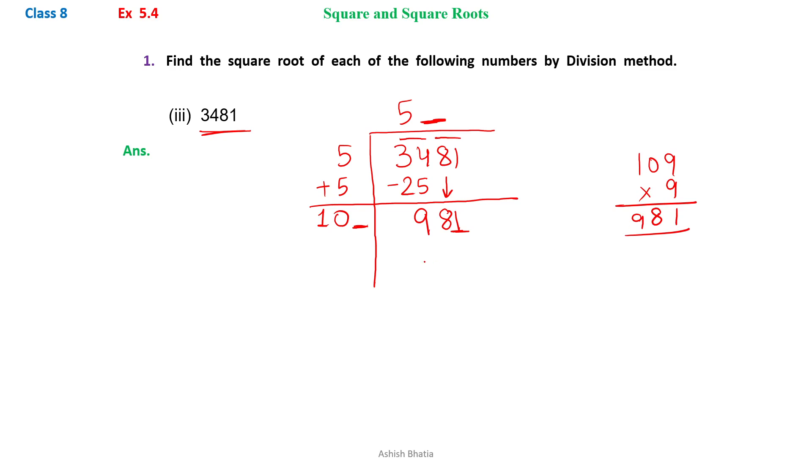And nine ones are nine. So we write nine here and nine here. So we get 981.